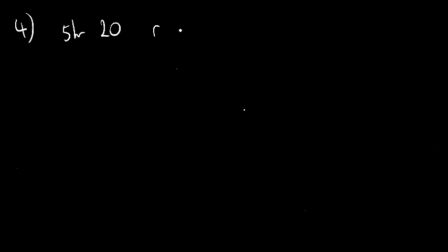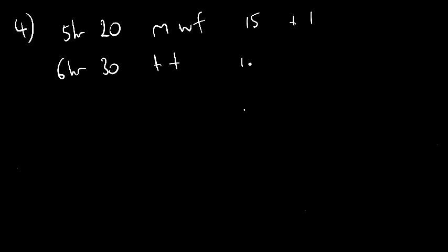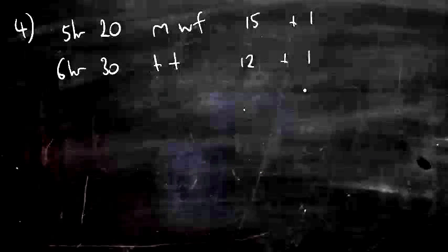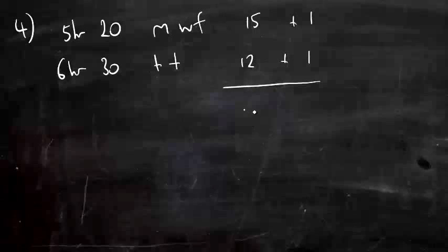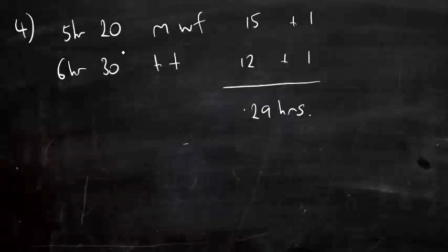Question 4. The school library is open for 5 hours 20 minutes per day on Monday, Wednesday and Friday, and for 6 hours 30 minutes per day on Tuesday and Thursday. What is the total time the library is open during the school week? Three lots of 5 hours is 15 hours, 3 lots of 20 minutes is another hour. Two lots of 6 hours is 12 hours, 2 lots of 30 minutes is 1 hour. Add them all up to get 29 hours.